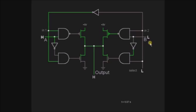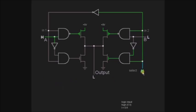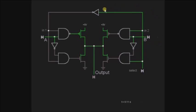Now we will check how selection line B is selected. When the selection line is high, input B is selected for the output of the MUX. The operation is similar to input A — if the input B is low, then the output of the MUX is low; if the input B is high, the output will be high.